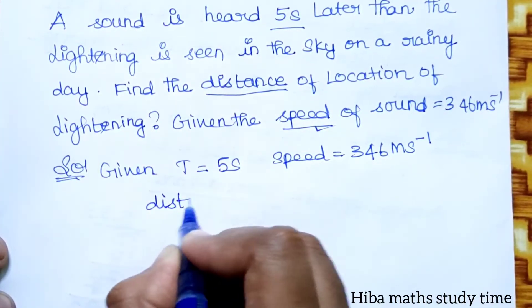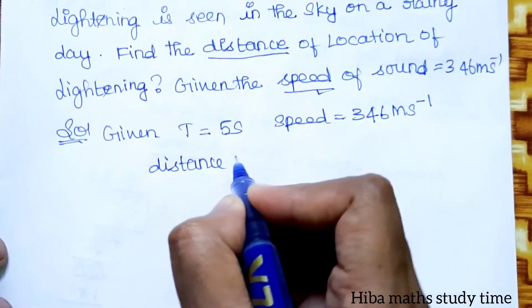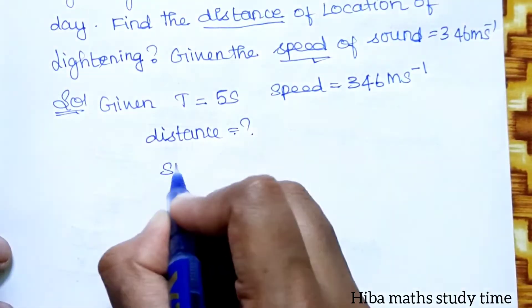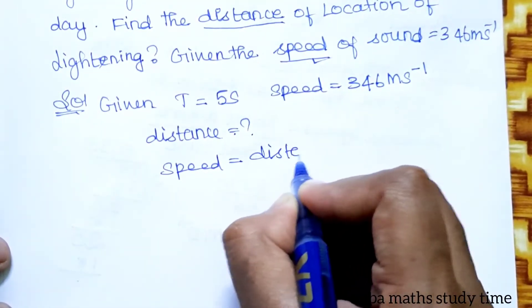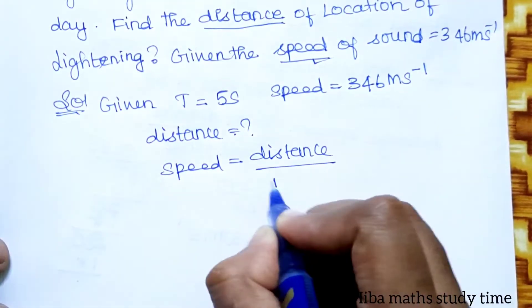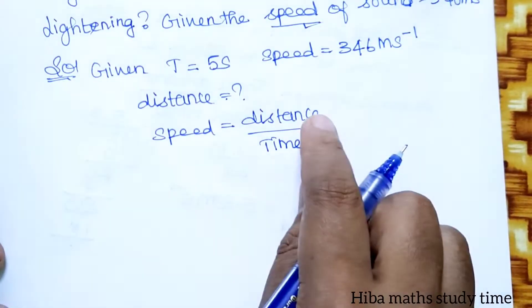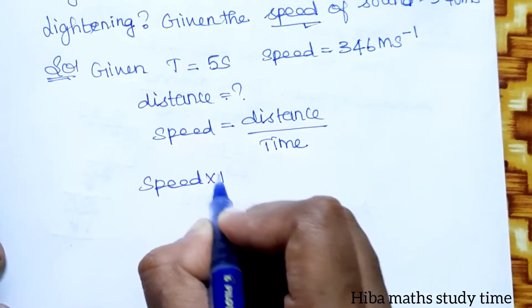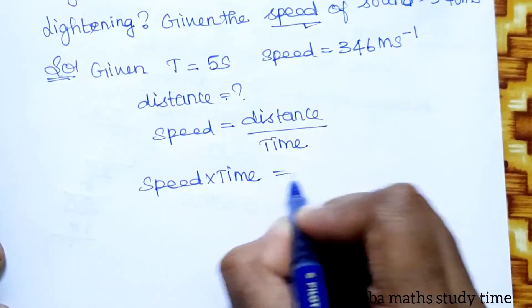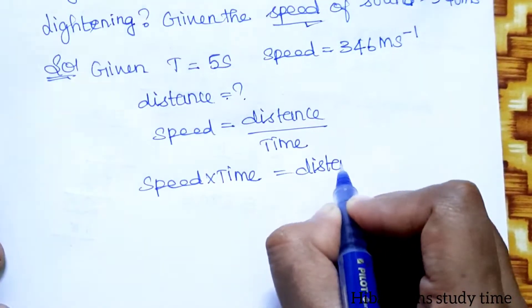What do I do? Distance. Distance formula, let's say speed is equal to distance by time taken. If we have distance by time, we'll rearrange. Now speed into time is equal to distance.